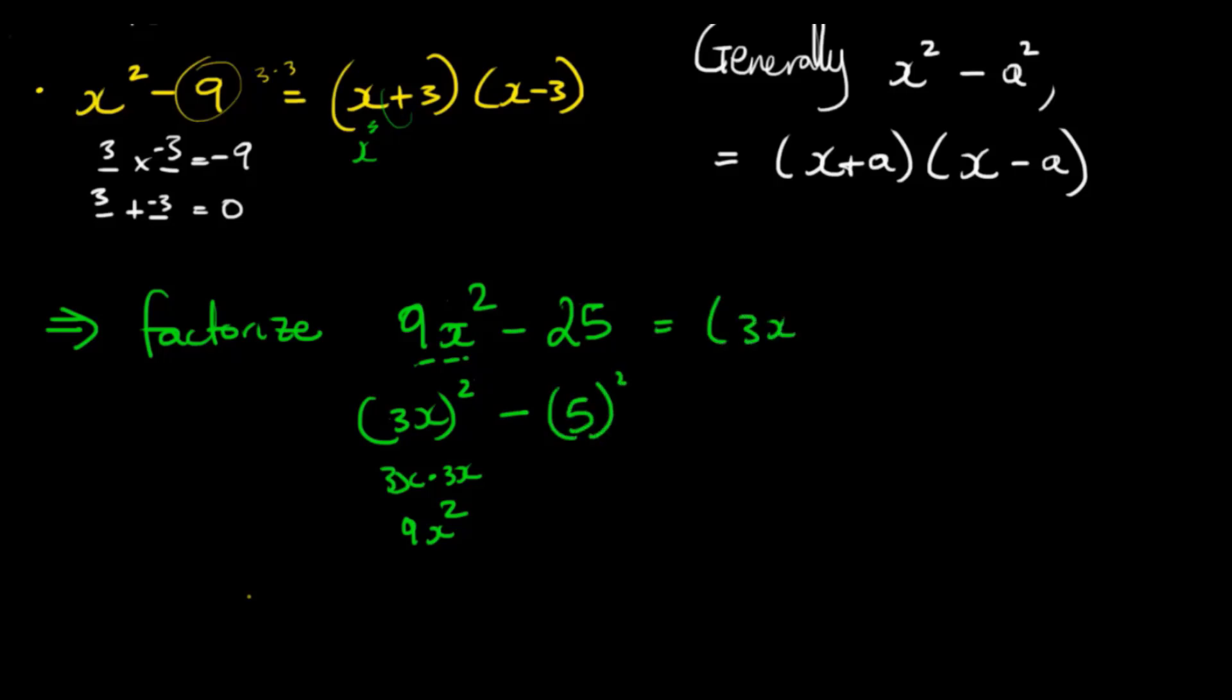So because we were able to find the roots of these two square numbers, now we can rewrite it when factored as the difference of two squares. So it would be 3x plus 5 times 3x minus 5.